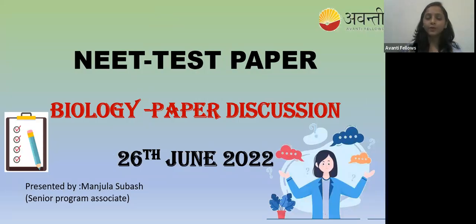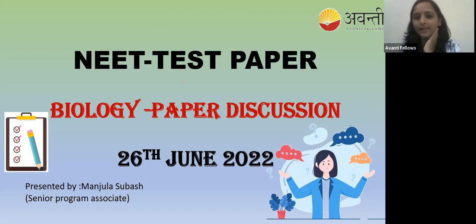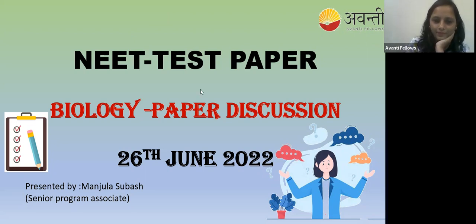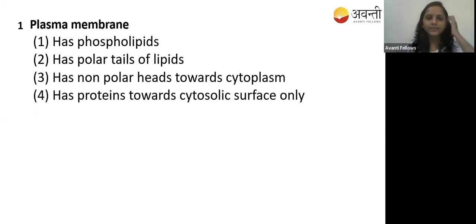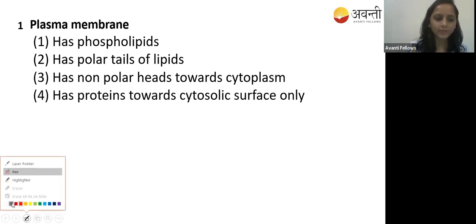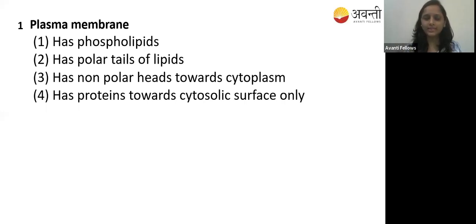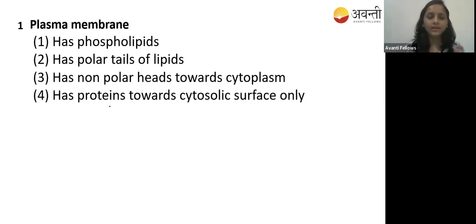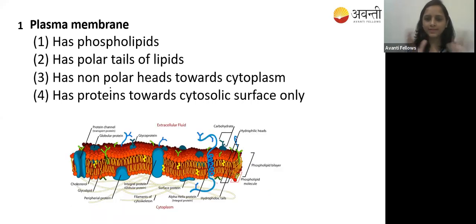Hello everyone, welcome to the class. Today we are going to discuss the NEAT test question paper held on 26th June. Let us go to the first question: plasma membrane. The options are: option one - has the phospholipid; option two - has polar tails of the lipid; option three - has non-polar heads towards the cytoplasm; option four - has the protein towards the cytoplasmic surface only.